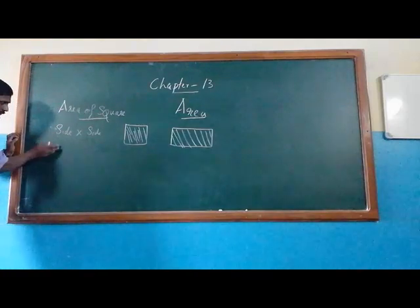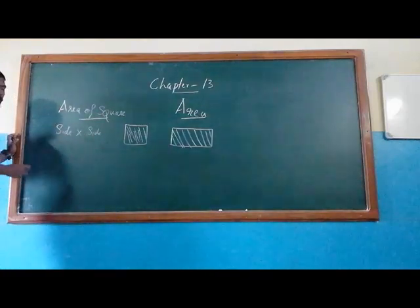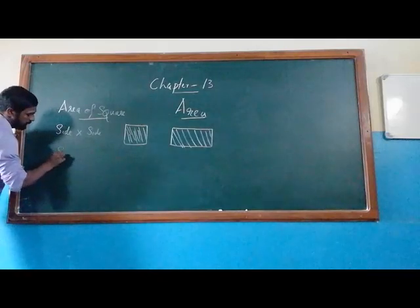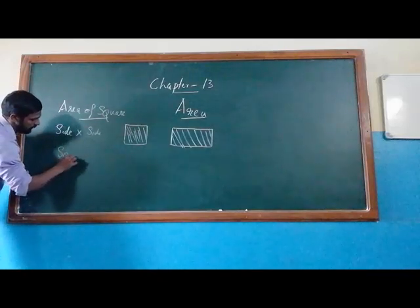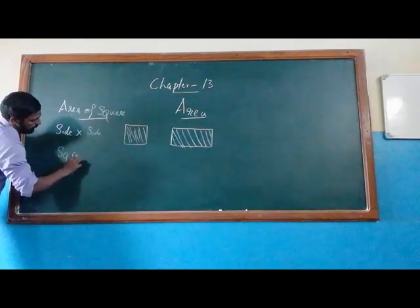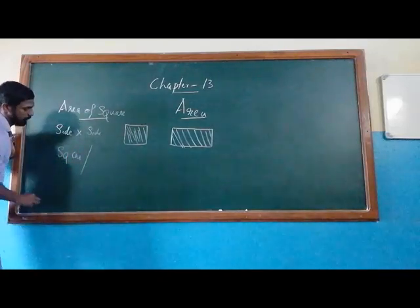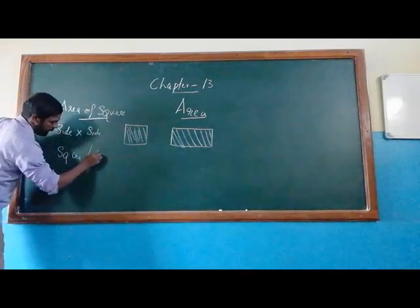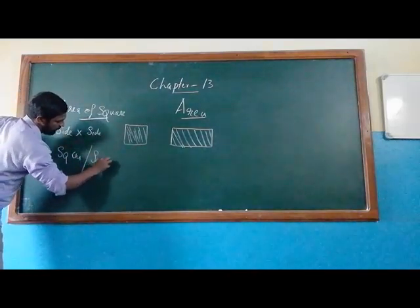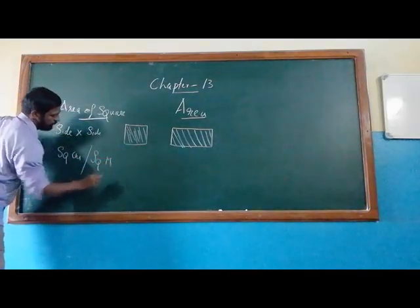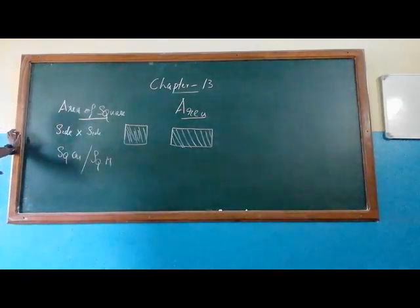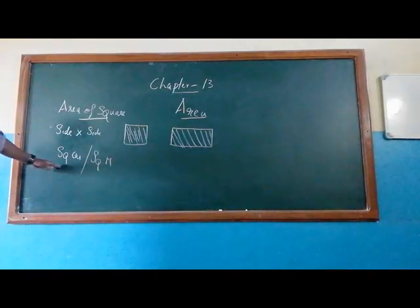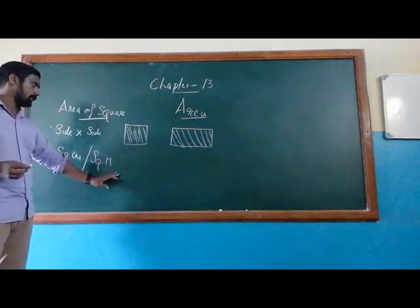The unit of area is: if it is measuring in centimeters, then we write square centimeter; or if it is written in meters, then we write square meter. So the unit of area is square centimeter or square meter.